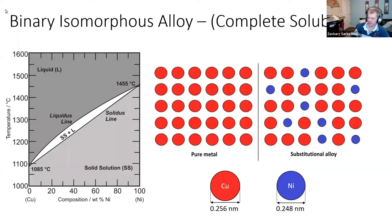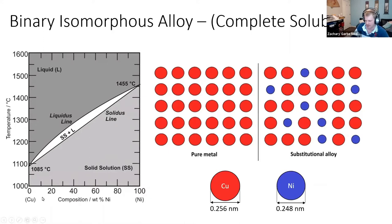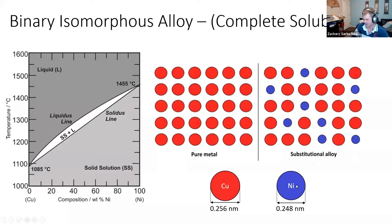Binary isomorphous alloys, as Dr. Brush covered, are completely soluble solid solutions — like adding salt to water that dissolves, but we're adding a solid to another solid and it will diffuse to create a homogeneous crystal structure. No matter what percentage of nickel we add to copper, the crystal structure is going to be the same — we're just substituting atoms. That's because of the Hume-Rothery rules: the atomic sizes are similar, so it creates a completely substitutional alloy.